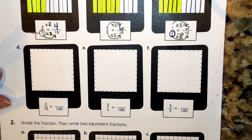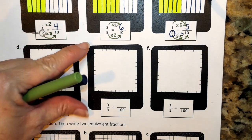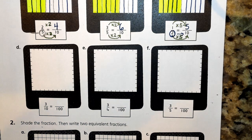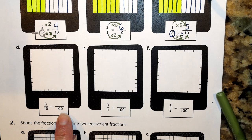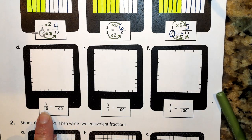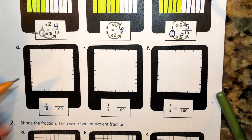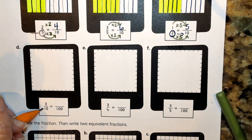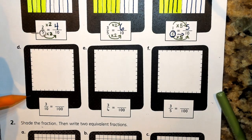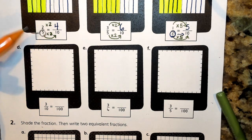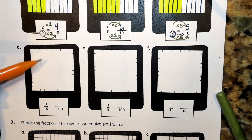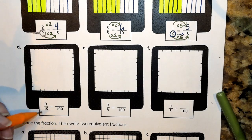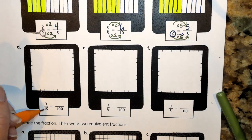We are now on the second row where we're going to be looking at D, E, and F. Before we get started, I want to remind you that we are trying to find equivalents from the first fraction listed to the second fraction. To do that, we're going to first look at our denominator. When I look at the denominator and it says 10, I notice that this picture has markings going both vertically and horizontally.